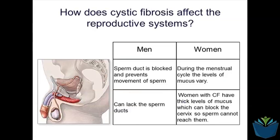Within the reproductive system, in men it can physically block the sperm ducts, leading to a low sperm count. It can also affect the menstrual cycle in women and in some cases block the cervix, reducing the likelihood of fertilization.